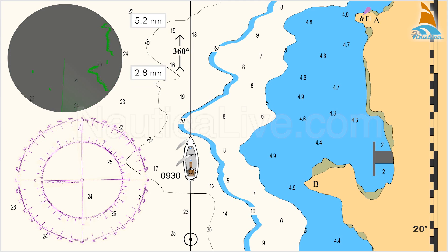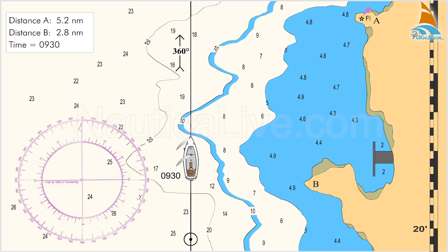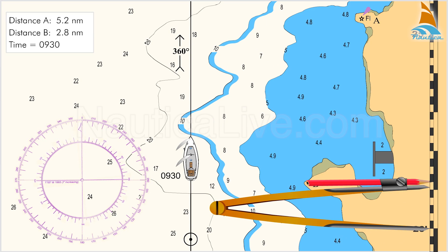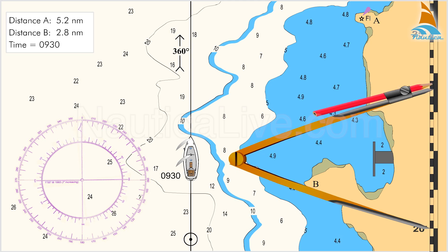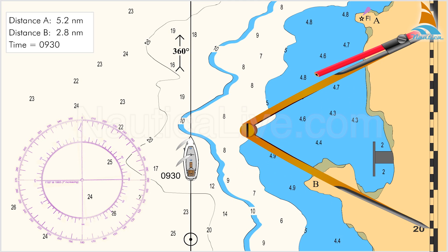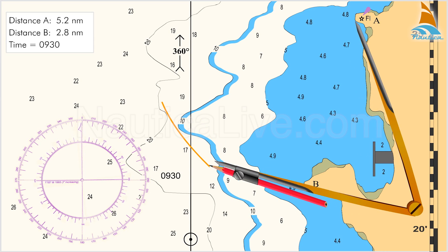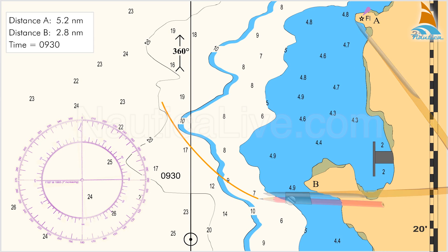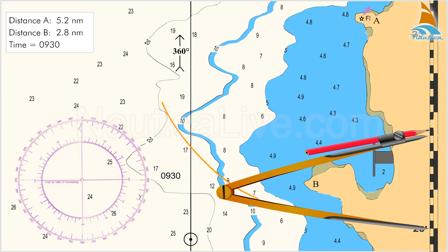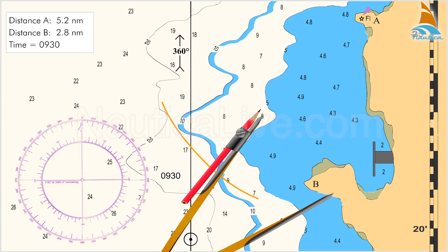Then return to the nautical chart and using the dividers, span a distance of 5.2 nautical miles on the latitude scale closest to the present position, which runs along the sides of the chart. Apply this span placing one leg of the dividers at point A and draw a semicircle near the course line. Now span a distance of 2.8 nautical miles and apply this span placing one leg of the dividers at point B.